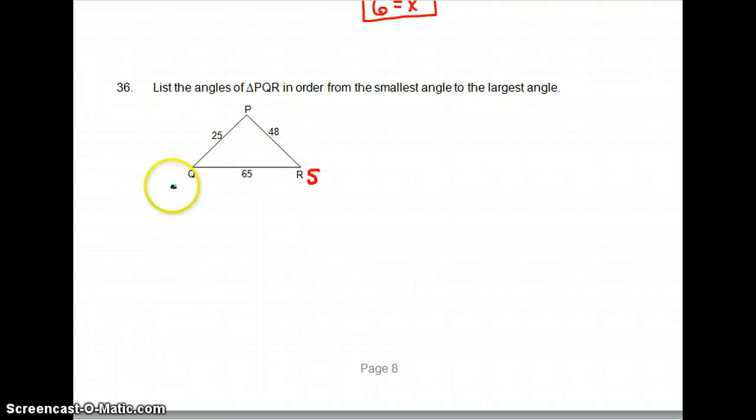40 is medium. 65 is large. So we can just go to the smallest angle R, medium angle Q, and then angle P.